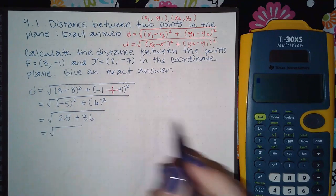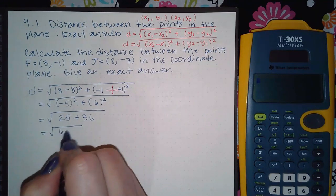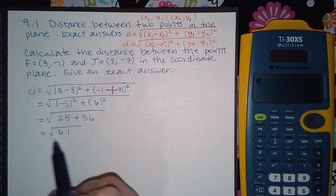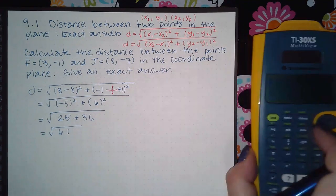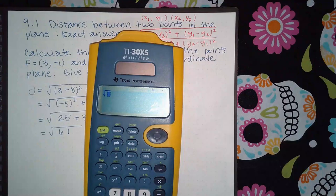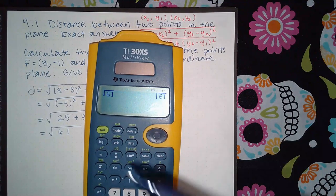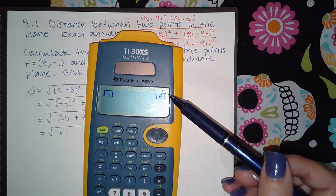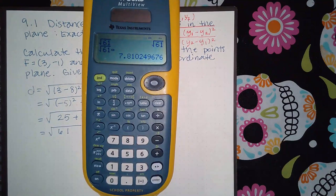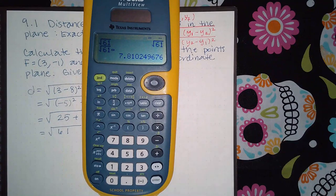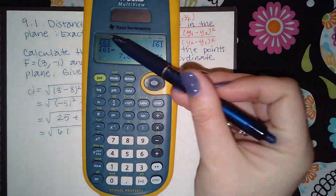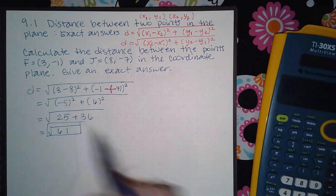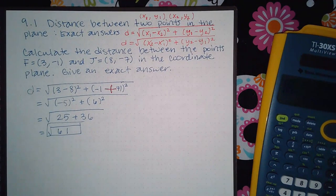That value is going to be 61. They want me not to type it in my calculator. You can try to type it in your calculator to see if your calculator will simplify the radical, but do not hit the double arrow and get the decimal because that's not what they want. They want the exact answer and this one does not simplify, so square root of 61 is the exact answer.